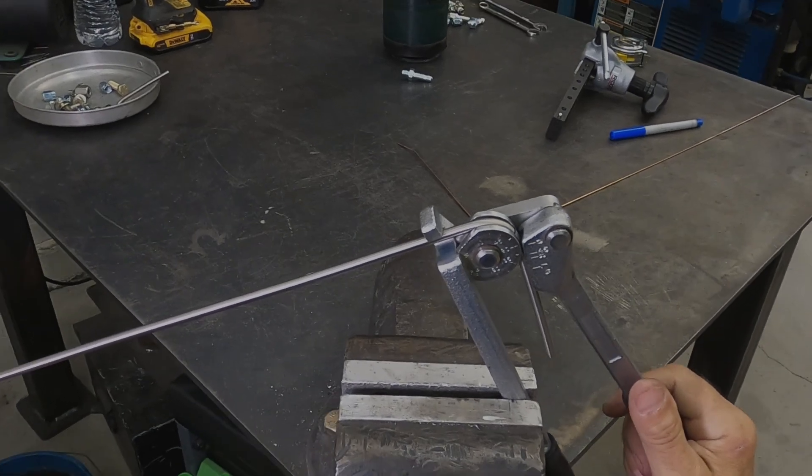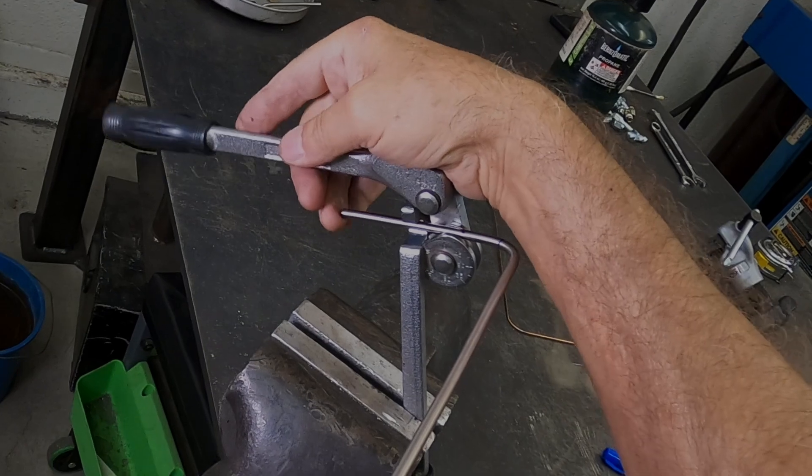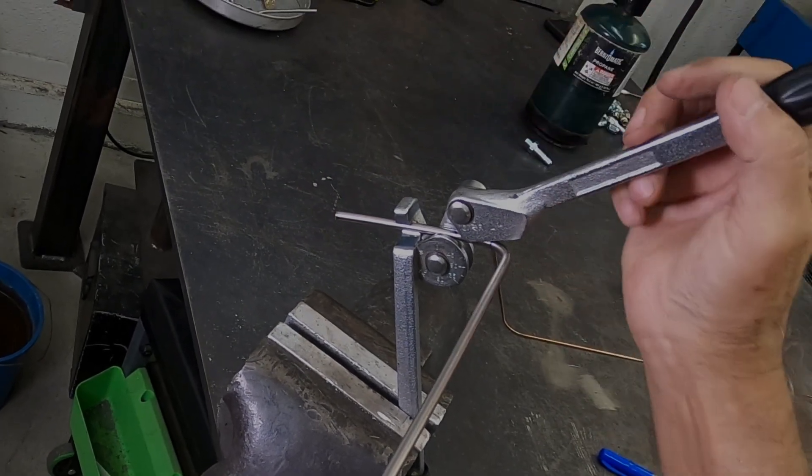You can and probably will make small adjustments later, but if you have completely botched a bend there's no fixing it and you'll just have to start over.